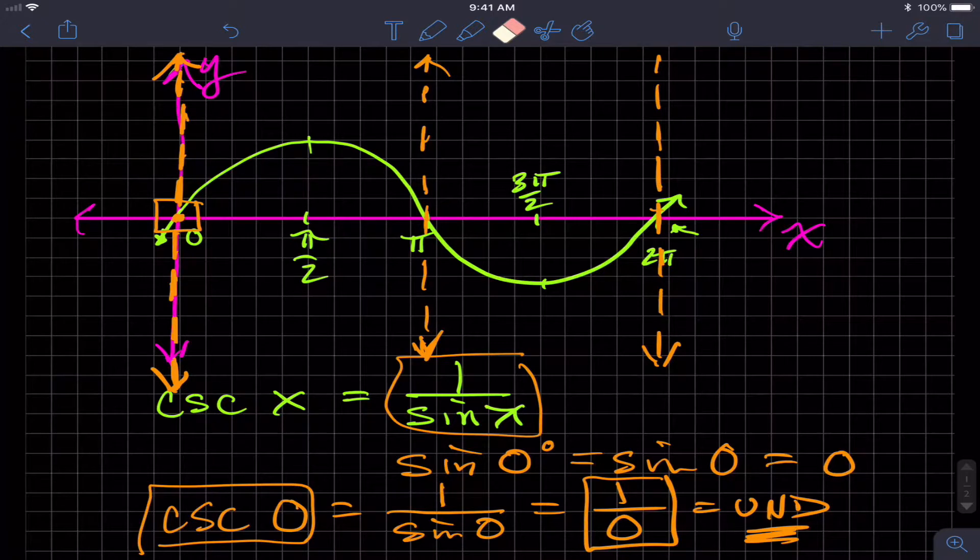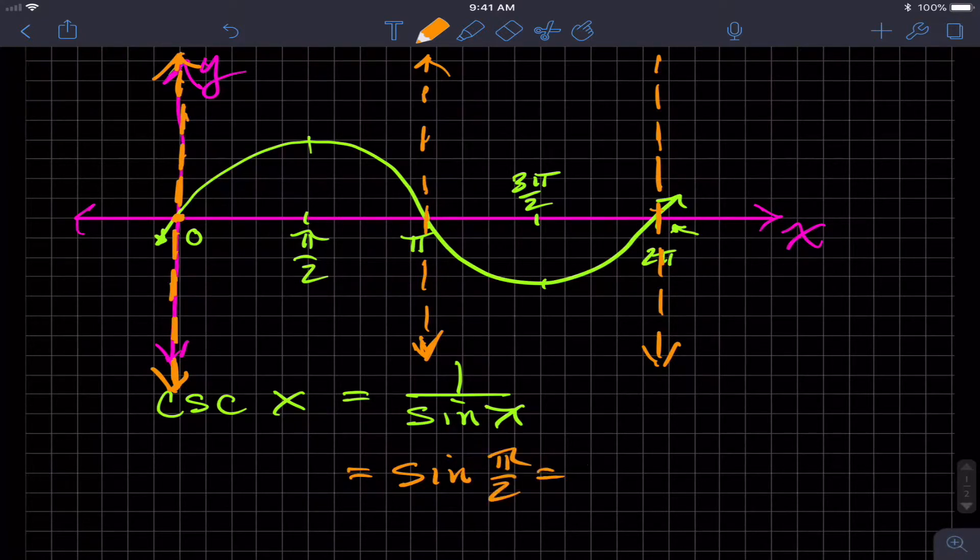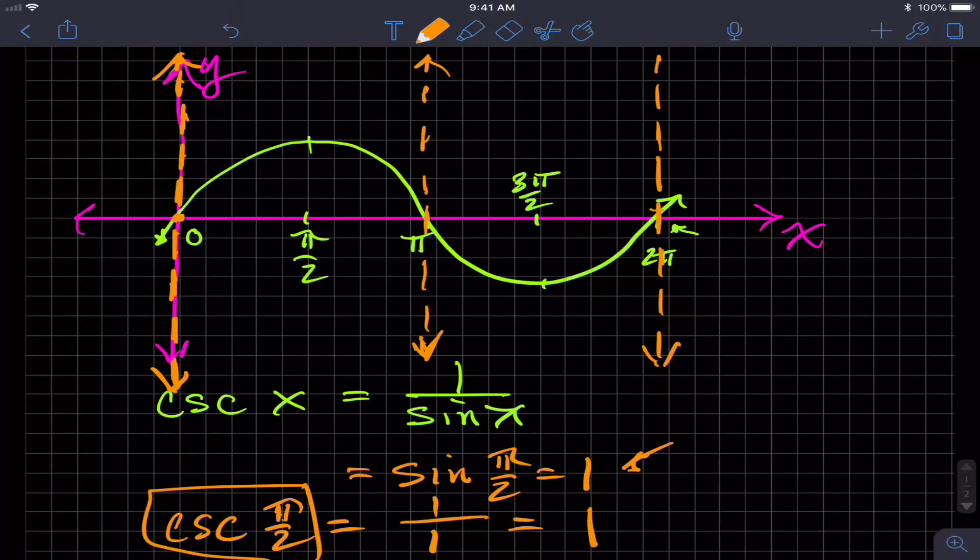Similarly, I'm going to erase this stuff in the bottom so we can keep working here. Let's get rid of this box. Go back to orange. When sine of an angle, let's say pi over two is equal to one, then cosecant of that same angle pi over two is going to be the reciprocal of sine, which means it's going to be one over one, which is one. So the cosecant of pi over two right here is one. It's the equivalent to sine of pi over two. If I look at the sine of three pi over two, I get negative one, which means the cosecant of three pi over two is one over negative one, which is still just negative one. And I get this point.